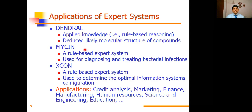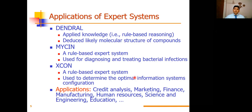Another is XCON, also a rule-based expert system used to determine the optimal information systems configuration — you may get great configuration information from the system. There are several other applications of expert systems in financial and non-financial, medical and non-medical social organizations, such as credit analysis — automatic credit analysis. Nowadays credit analysis happens automatically because of expert systems. Other areas include marketing, finance, manufacturing, human resources, science, engineering, and education. Several organizations are using expert systems to solve different problems.